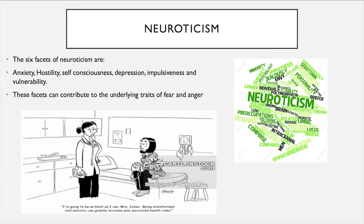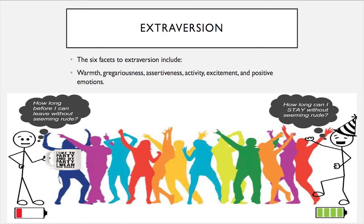The second dimension is extroversion. The six facets of extroversion include warmth, gregariousness, assertiveness, activity, excitement, and positive emotions. This deals with things like warmth and attachment to others, also associated with the desire to be around people. It is the act of being social. These types of people tend to be busy and tend to express themselves very easily.